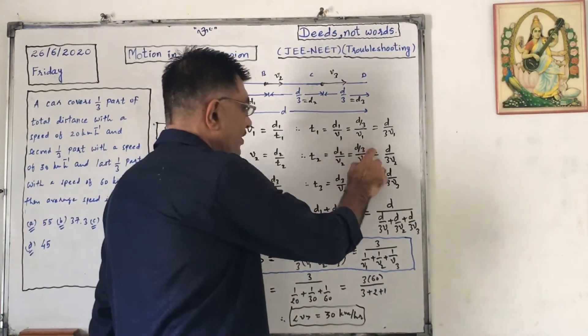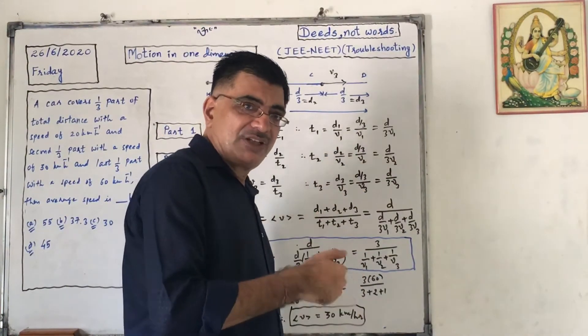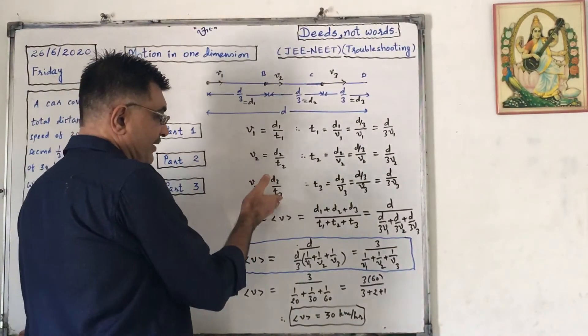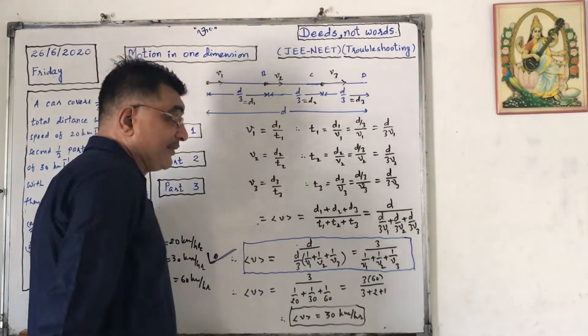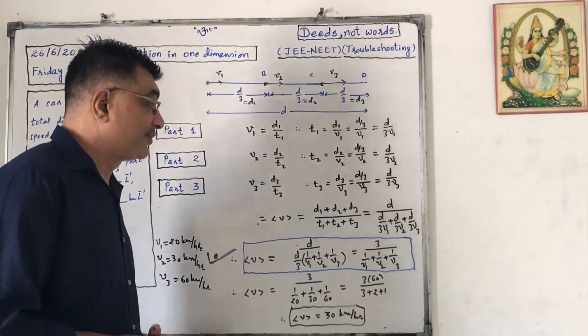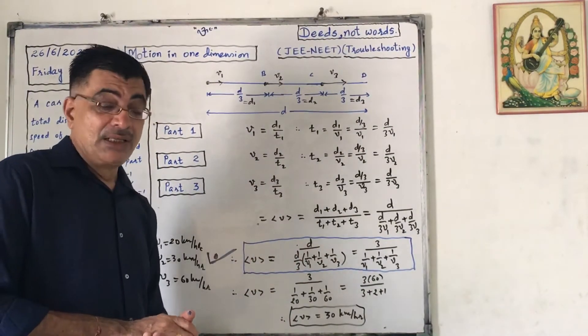Again, D2 is D by 3, so D by 3 upon V2, that is D upon 3V2. Then V3 equals to D3 by T3, therefore T3 equals to D3 by V3. Again, D3 is D by 3, so D by 3 upon V3, so that is D by 3V3.